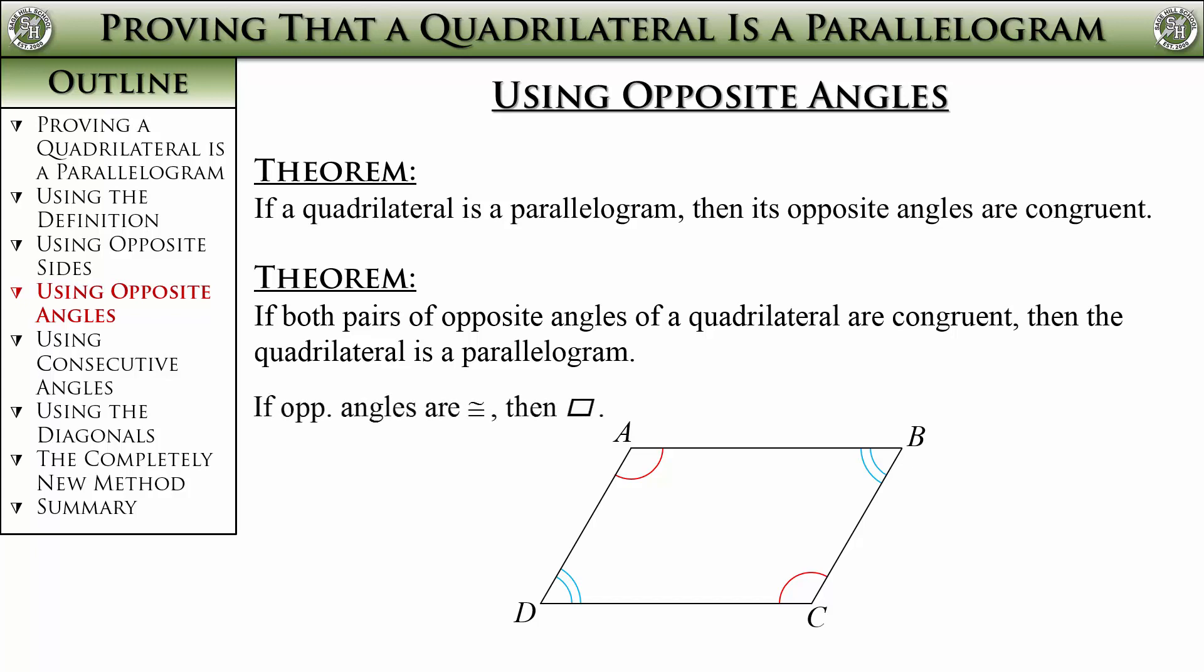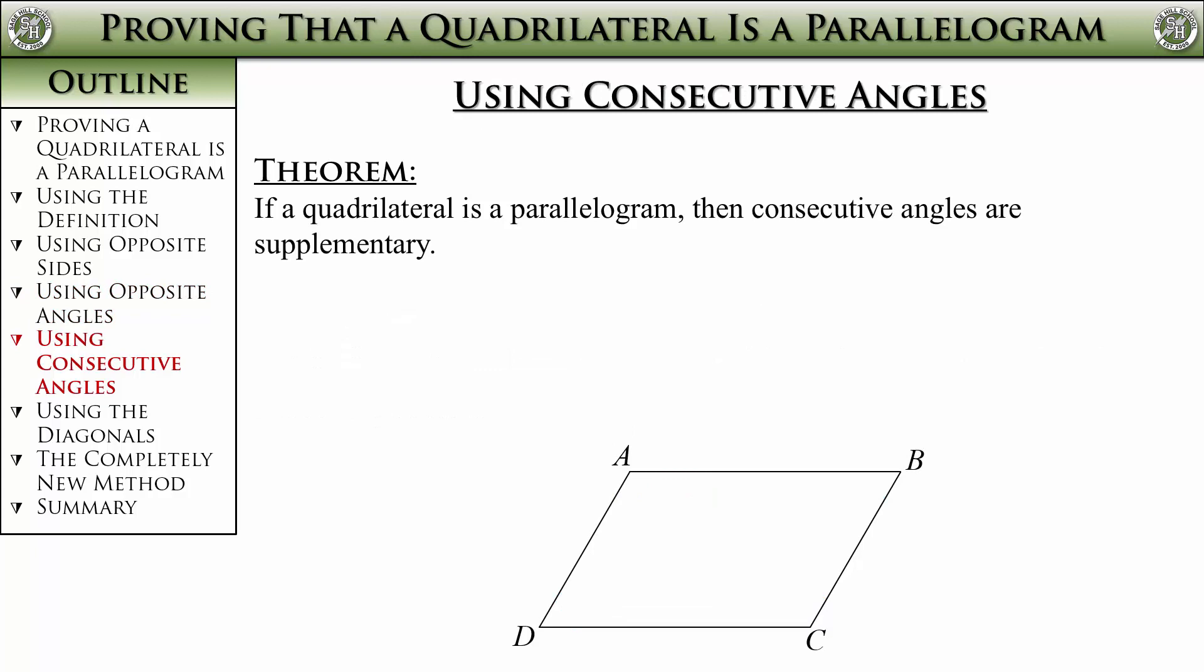I know six ways to prove parallelograms seemed intimidating, but this isn't so bad, right? Consecutive angles are up next, although this one is changed a tiny bit to make your life easier. In the original theorem we had a parallelogram, and we could then say that every pair of consecutive angles was supplementary since the lines are parallel and they are same side interior angles. That's great.